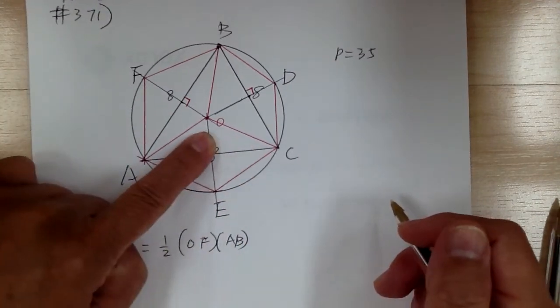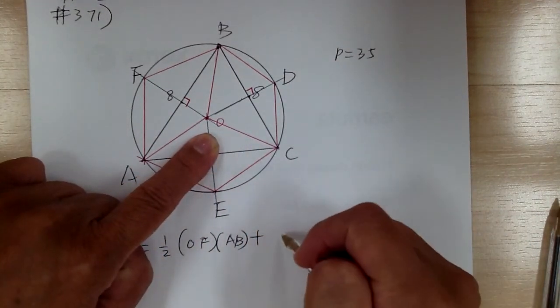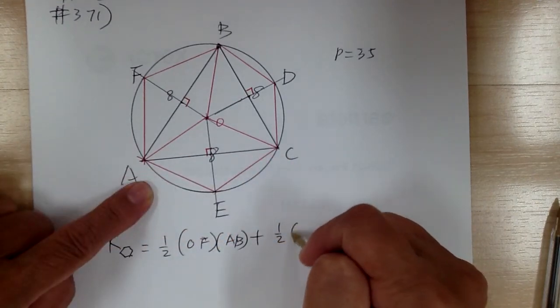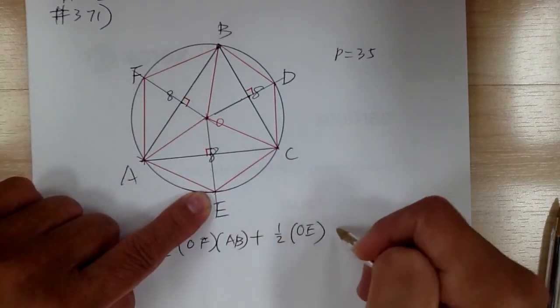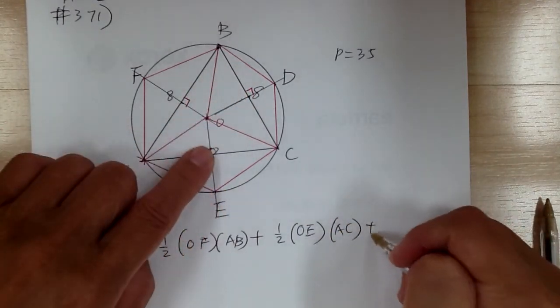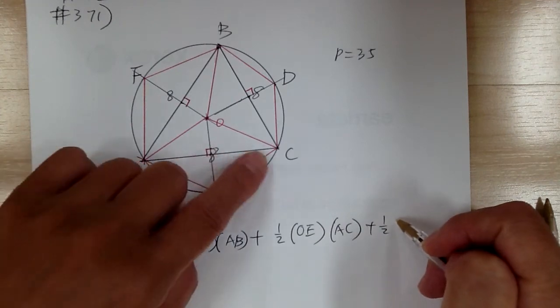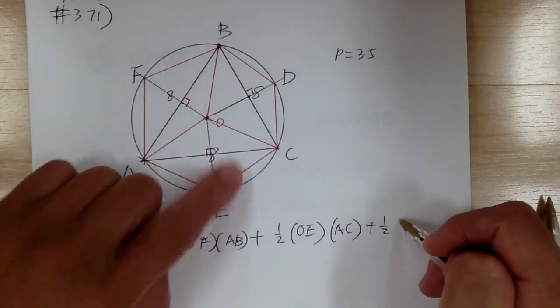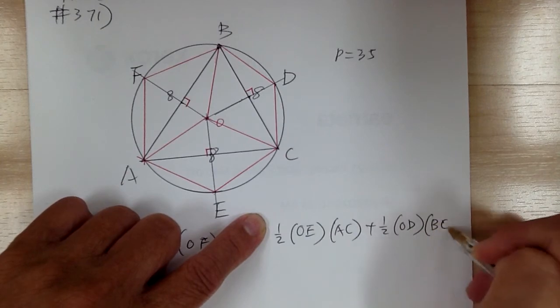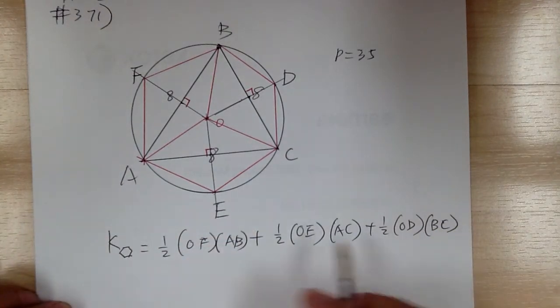Now for this one over here, it would be one-half times the diagonal d1 times d2, which would be OD times BC. And now notice that OF, OE, and OD are all radii.